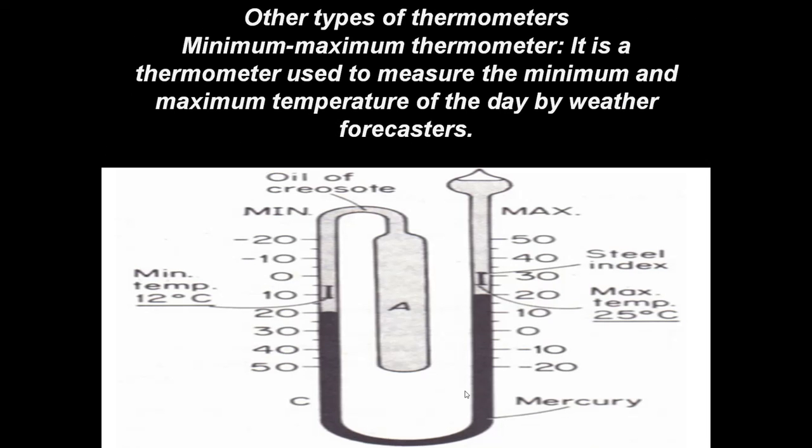The other type of thermometer is the maximum-minimum thermometer. It is used to measure the minimum and maximum temperature of the day by weather forecasters. Whenever you watch the weather news, you may observe that they give information on the minimum and maximum temperature of a particular area. This type of thermometer is used to measure both the minimum and maximum temperature of a particular area.